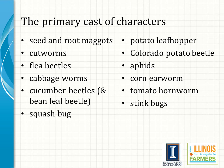The main pests of vegetable crops include seed and root maggots, cutworms, flea beetles, worms in cabbage, cucumber beetles and bean leaf beetle, squash bug on squash and pumpkins, potato leafhopper, Colorado potato beetle, aphids, corn earworm, tomato hornworm, and stink bugs. Others are addressed in the Midwest Vegetable Production Guide and in some of the references listed previously.